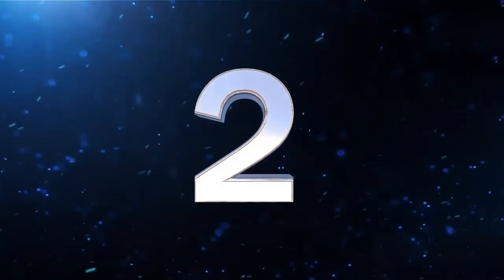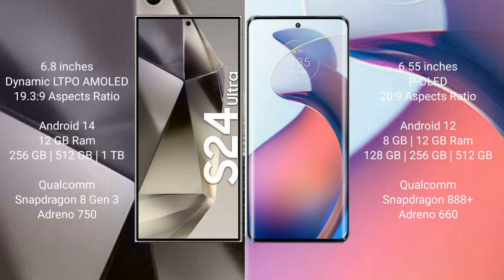Samsung Galaxy S24 Ultra comes with a 6.8-inch Dynamic LTPO AMOLED display and aspect ratio 19.3:9. Motorola Moto S30 Pro comes with a 6.55-inch P-OLED display and aspect ratio 20:9.